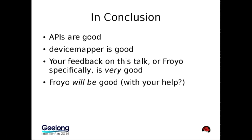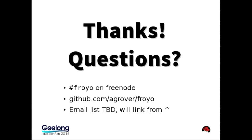In conclusion: programmatic APIs are good. Device Mapper is cool — I don't think using it just through LVM takes full advantage of the active changes and manipulations that the in-kernel Device Mapper module is capable of, and that we're trying to take advantage of in Froyo. This is the first time I've been talking about Froyo, so I'd really like your feedback on the concepts. We've got an IRC channel, a repo, and hopefully an email list shortly — that'll be documented on the GitHub repo.